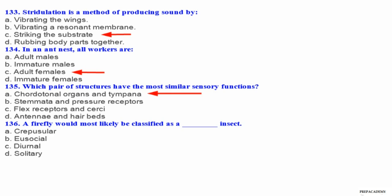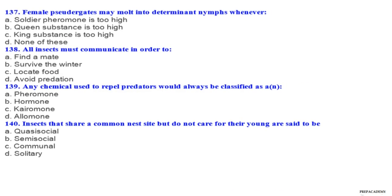Question 136. A firefly would most likely be classified as a crepuscular or eusocial insect? A crepuscular, B eusocial, C diurnal, D solitary. Question 137. Female pseudergates may molt into replacement nymphs whenever: A soldier pheromone is too high, B queen substance is too high, C king substance is too high, D none of these. Question 138. All insects must communicate in order to: A find a mate, B survive the winter, C locate food, D avoid predation.